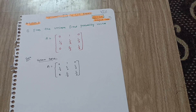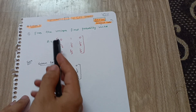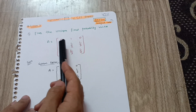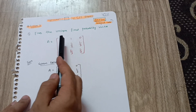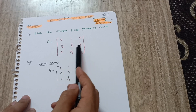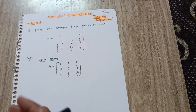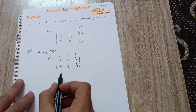Welcome back to my lecture on Mathematics 3 for the CSE branch, subject code BCS301. Today I am going to tackle the unique fixed probability vector. Questions will be like: find the unique fixed probability vector. The matrix A is given as [0, 1, 0; 1/6, 1/2, 1/3; 0, 2/3, 1/3]. This is the given data you have to write down in the examination.